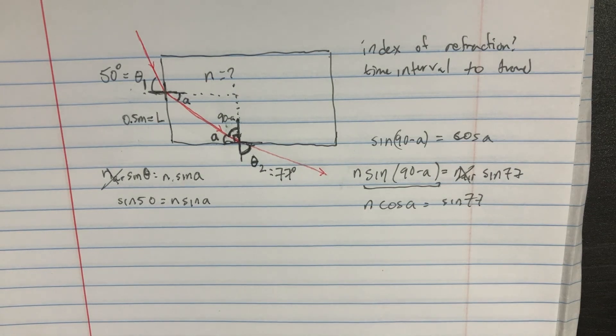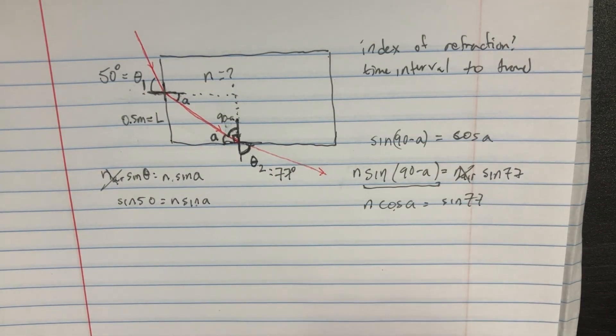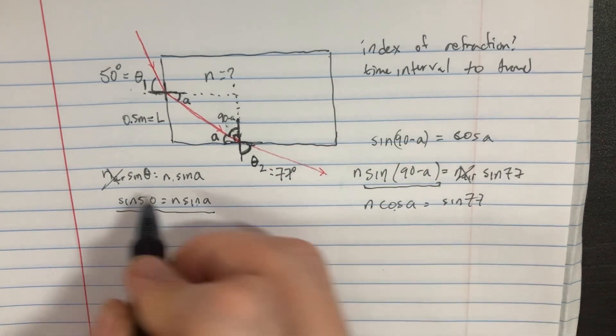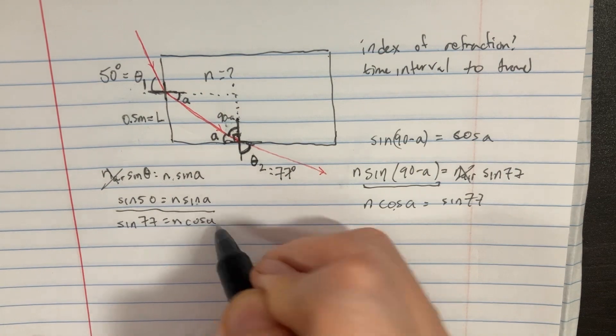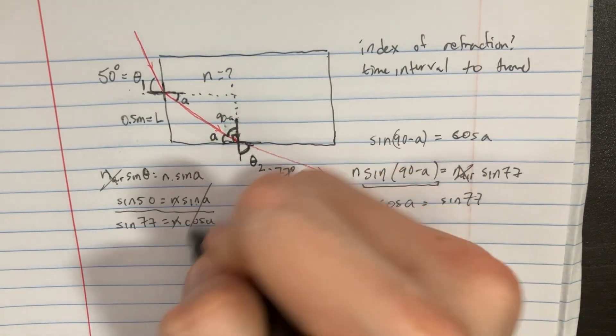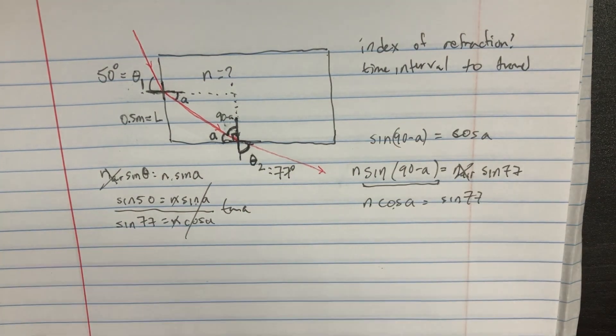And now there's something interesting we can see here because we have the sine and the cosine. So if we were to divide these two equations by each other, sine of 77 equals n cosine of A, then these n's will cancel, but we're left with the tangent of A on this side, and so we can solve for that.